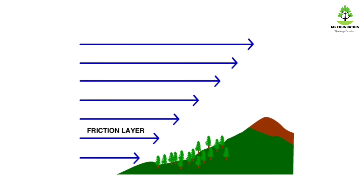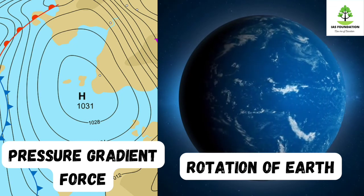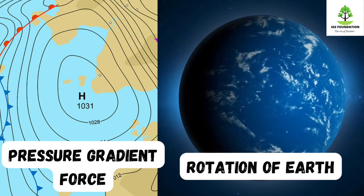Land, mountains, and other terrain create friction at the ground. This pressure gradient force and Coriolis force together, balanced by friction, control the wind. When the isobar is parallel and the wind flows straight, this is called geostrophic wind.